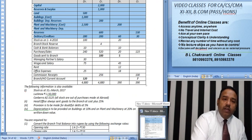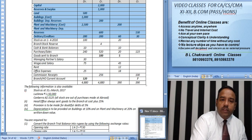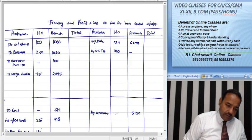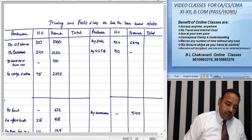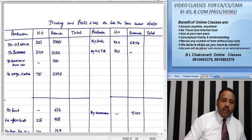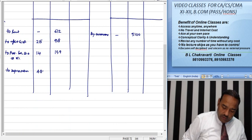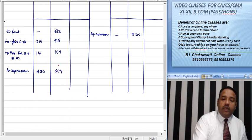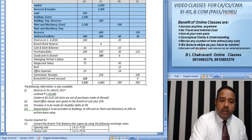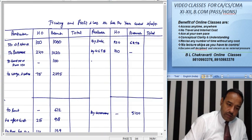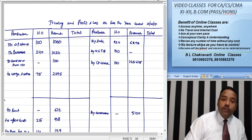Provision for bad debts: head office provision is 14 on debtors of 280; branch provision is 159 on debtors of 3180. Depreciation from working note: head office 460 (building 80 + P&M 380), branch 644. Closing stock: head office 150, branch 165,625.